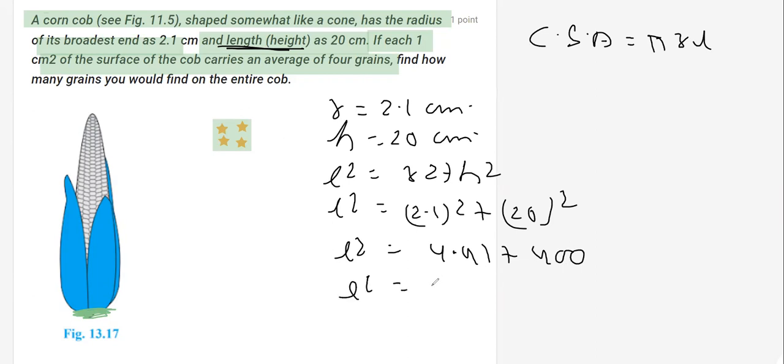So therefore l² comes out to be 404.41. Now then you will have to find l, which is the square root of this. So that will give you 404.41, and the square root of this, therefore l comes out to be 20.11 centimeters.